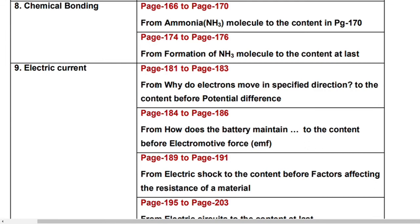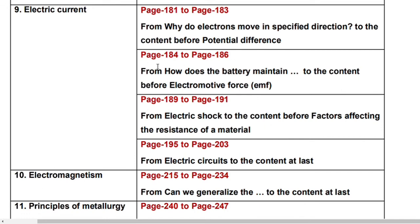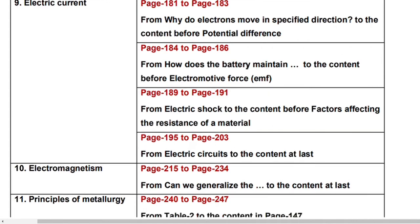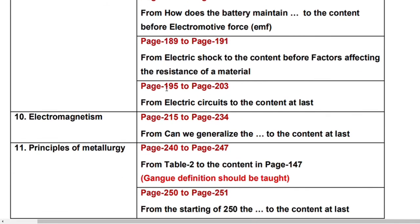The next chapter is Electric Current: page number 181 to page number 183 from 'why do electrons move in a specific direction' to the content before potential difference. Similarly, page number 184 to page number 186 from 'how does the battery maintain' to the content before electromotive force EMF. Page number 189 to page number 191 from electric shock to the content before factors affecting the resistance of material. And page number 195 to page number 203 from electric circuits to the content at last.